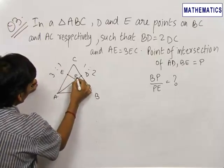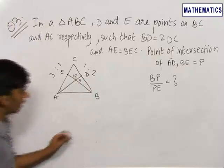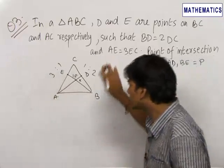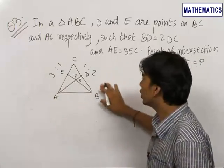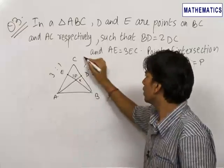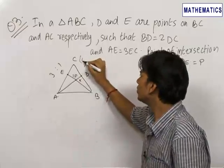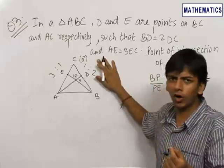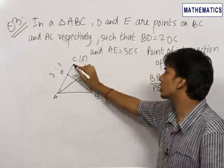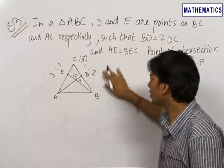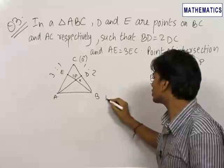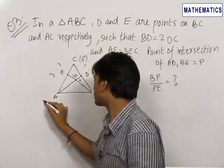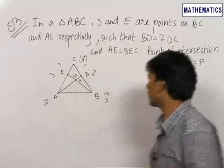Let this ratio BP:PE be K is to 1. To solve these type of questions, it is always advisable to assume position vectors. We can take any point as origin. Therefore, we have chosen C to be the origin for ease of calculations. Let the position vector of B be vector B and the position vector of A be vector A.